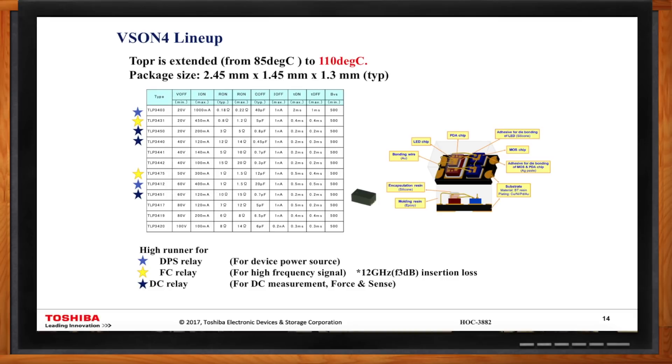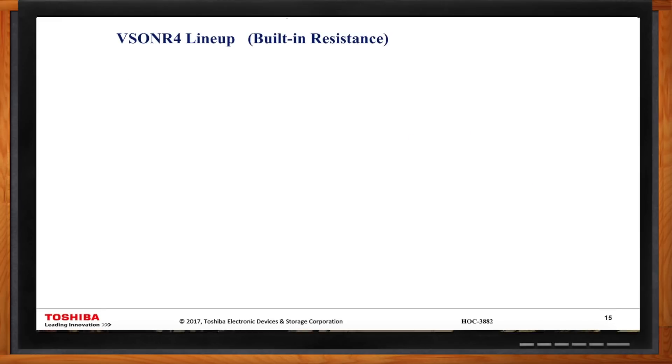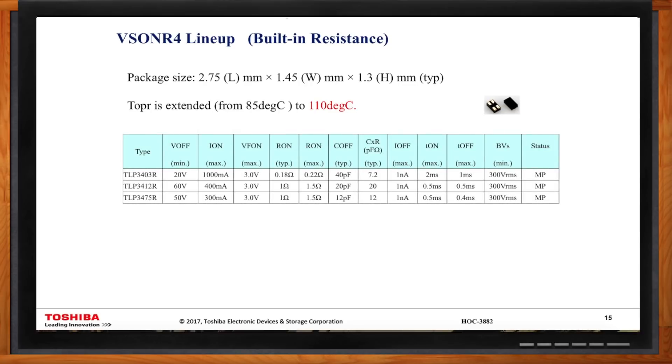By the way, I use external input resistors. It would help a lot if I could eliminate those. Is that an option? Yes, absolutely. In fact, we have a family that specifically addressed that. The VSON4 lineup basically have built-in resistance. And once again, we're very small package, only 2.75 by 1.45, and the same very thin height of the package, which is 1.3 millimeter. And all of this coupler is operating temperature 110 degree.